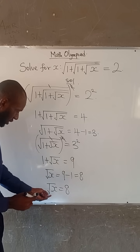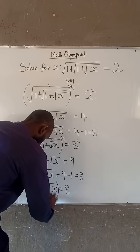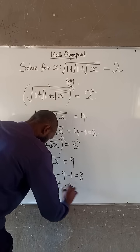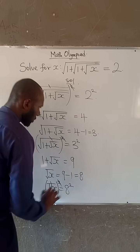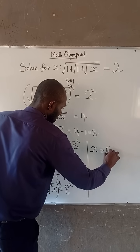Also, at this point, to solve for x, we square both sides. If we square both sides again, this square will cancel this root. So we have that x equals 64.